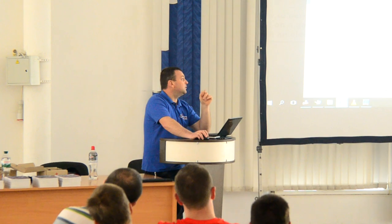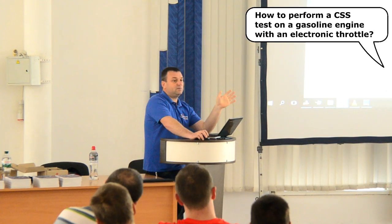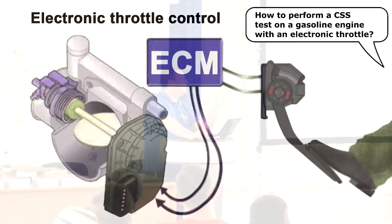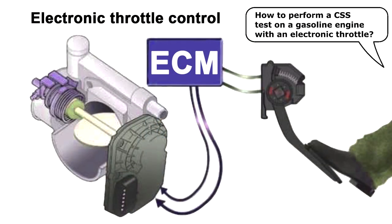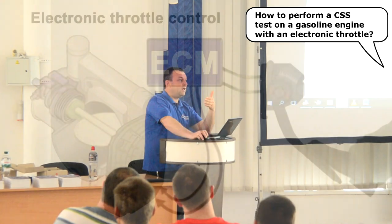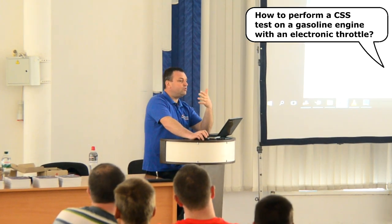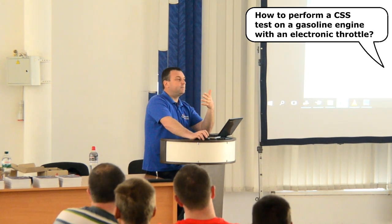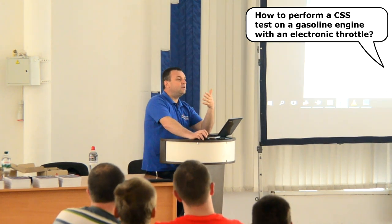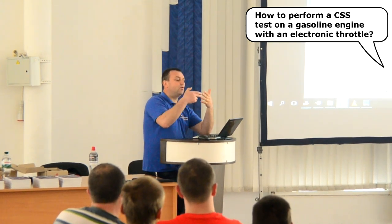On modern cars, instead of a mechanical connection between the accelerator pedal and the throttle, an electronic pedal and an electronic throttle actuator are used. When performing a CSS test on such cars, during the last step of the measurement, the throttle valve may close despite the fact that the accelerator pedal was still pressed.